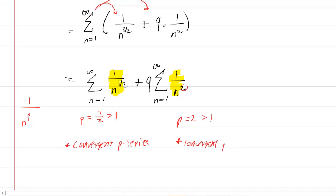We have the sum of two convergent p-series. Therefore, the original series, radical n plus 9 over n squared, is convergent.